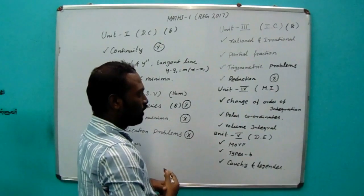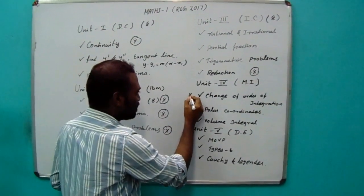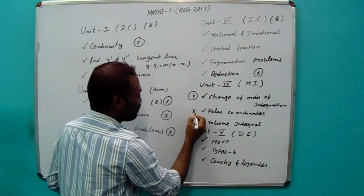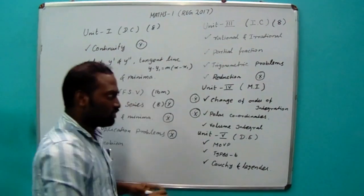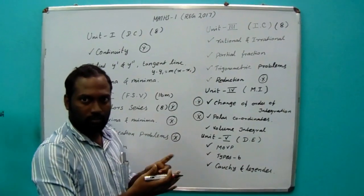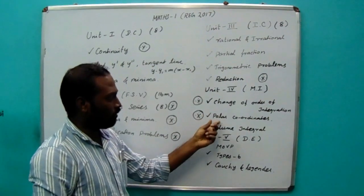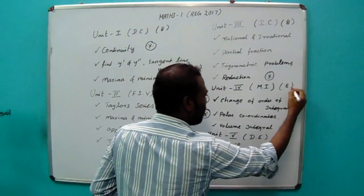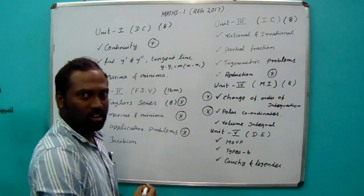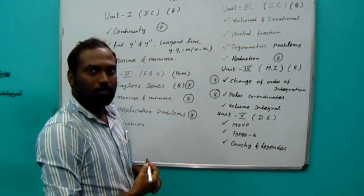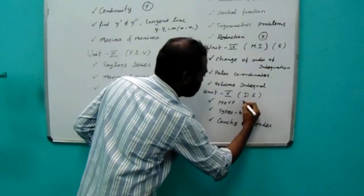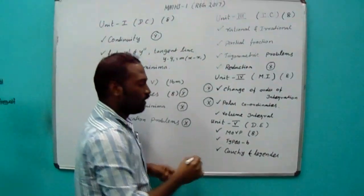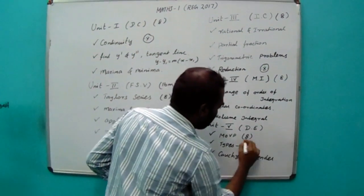Once you have covered 2 topics, you can see the center side. Most of the questions are combined in two topics — first topic is change of order and the other topic is polar coordinates. You get the 16 marks. You can see the 8 marks. Unit 5: MOP based problems — there are 8 problems, 6 types.